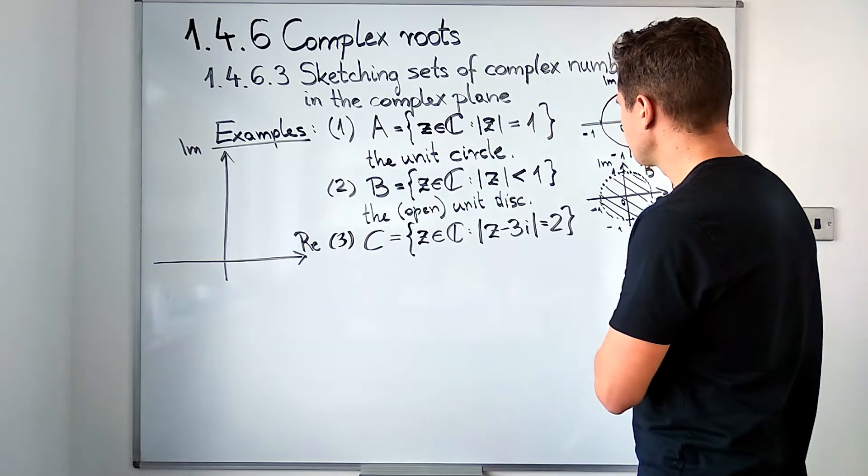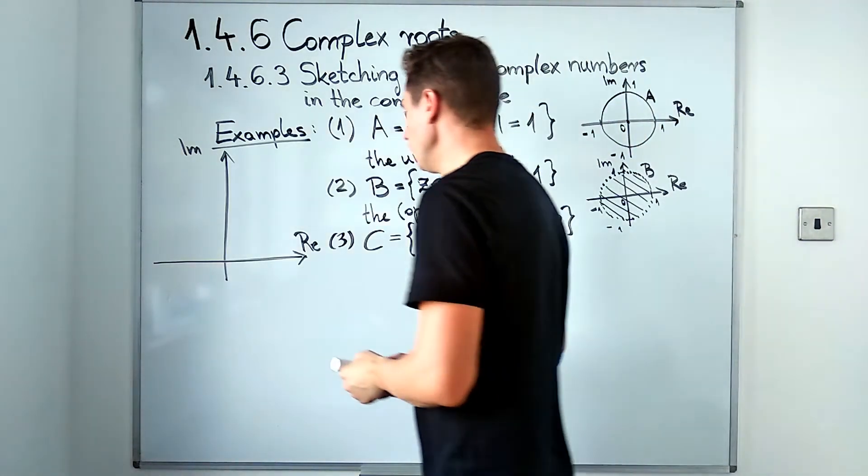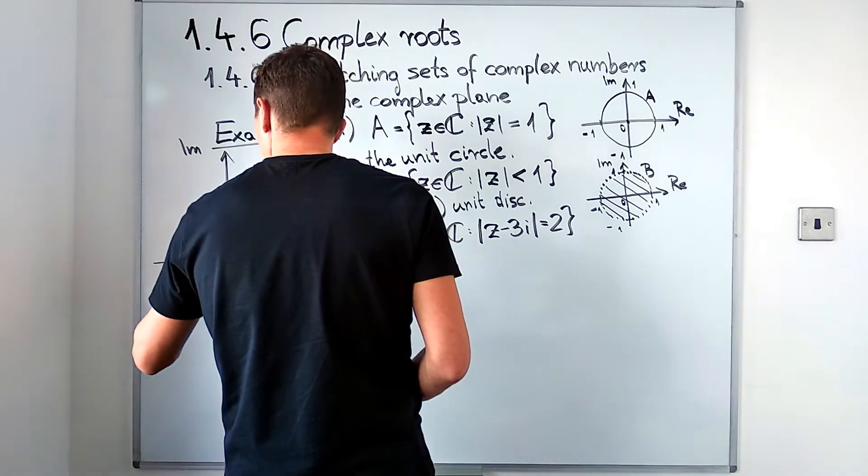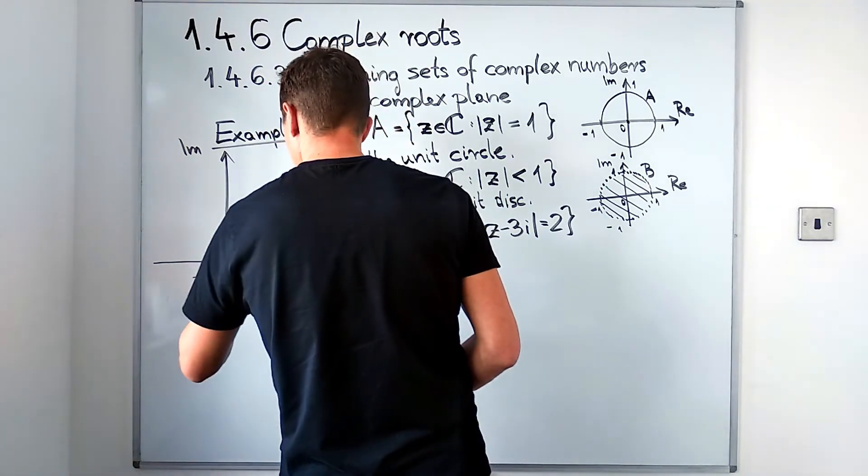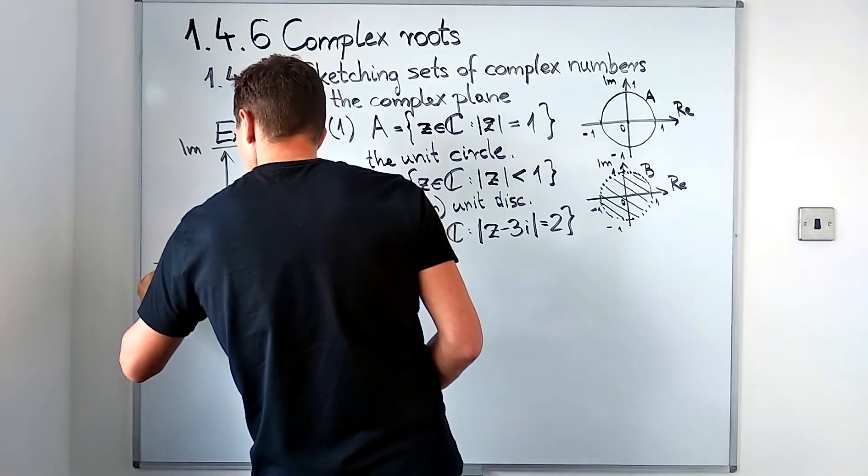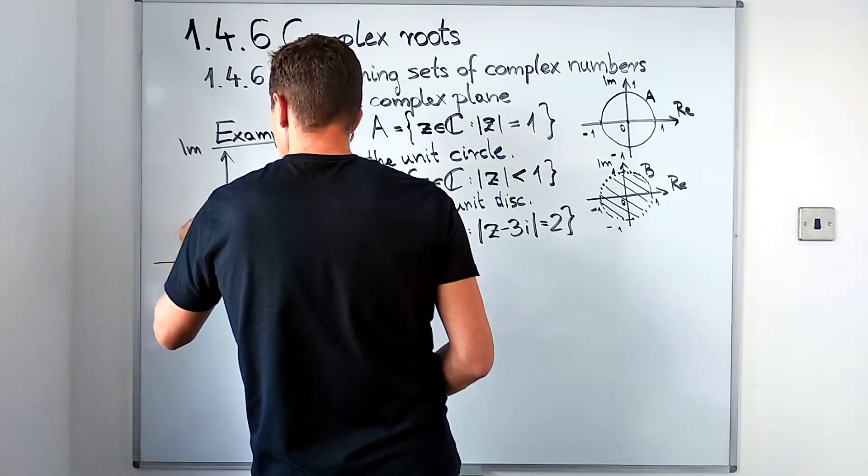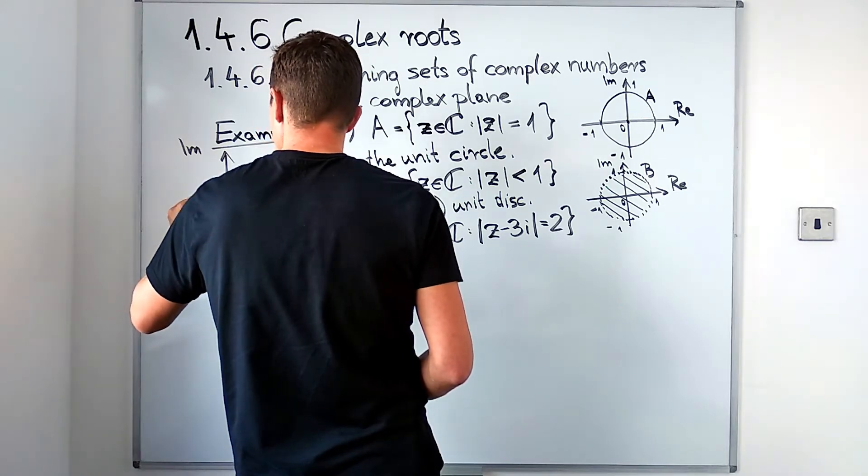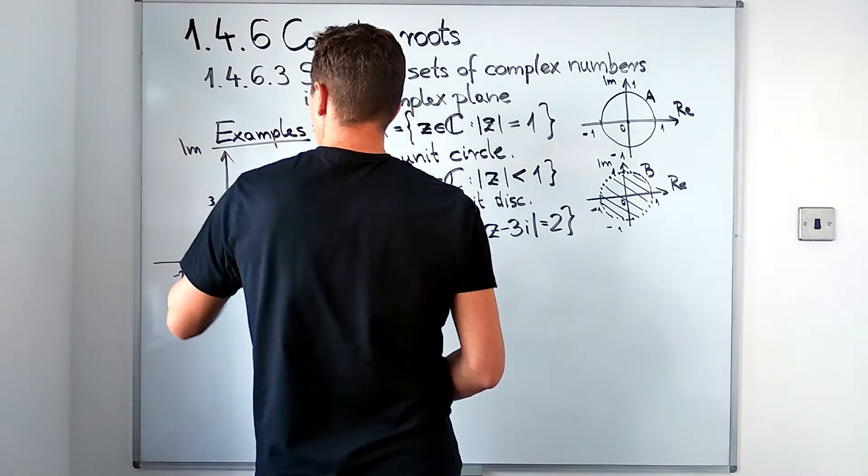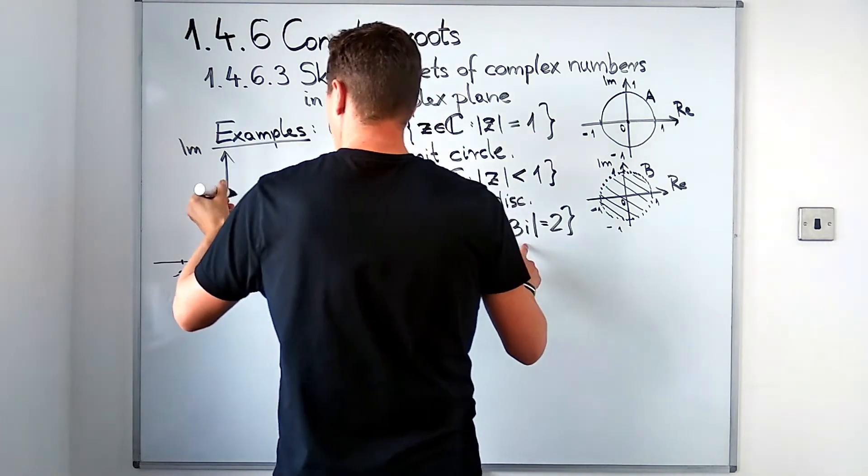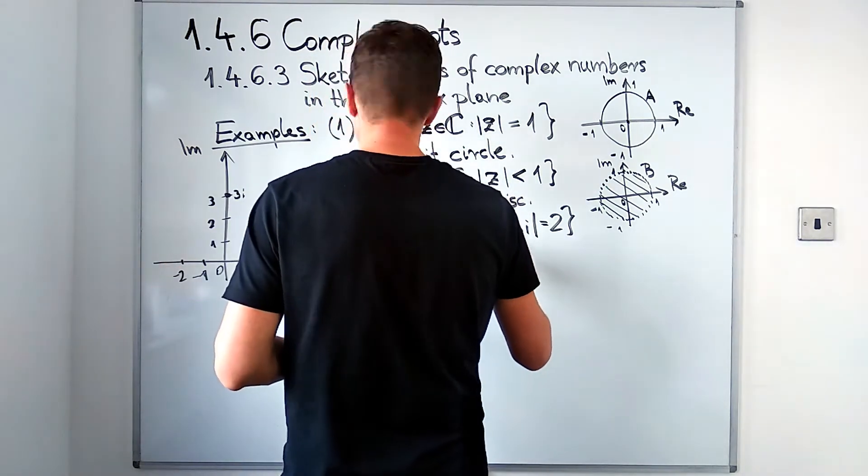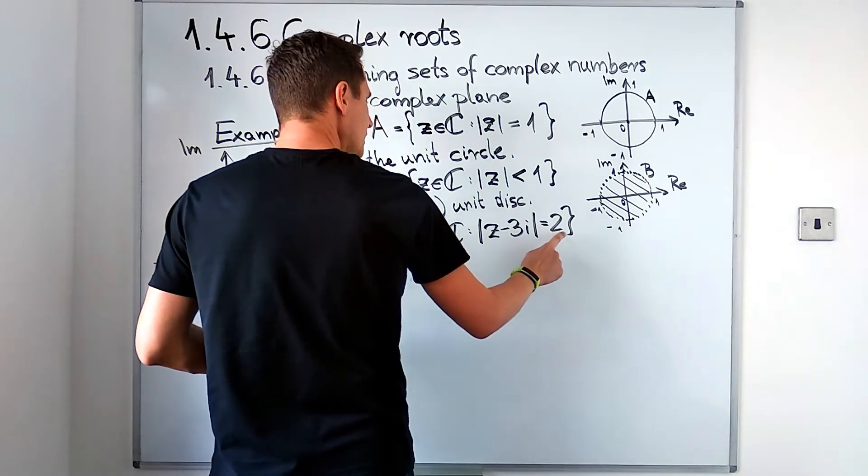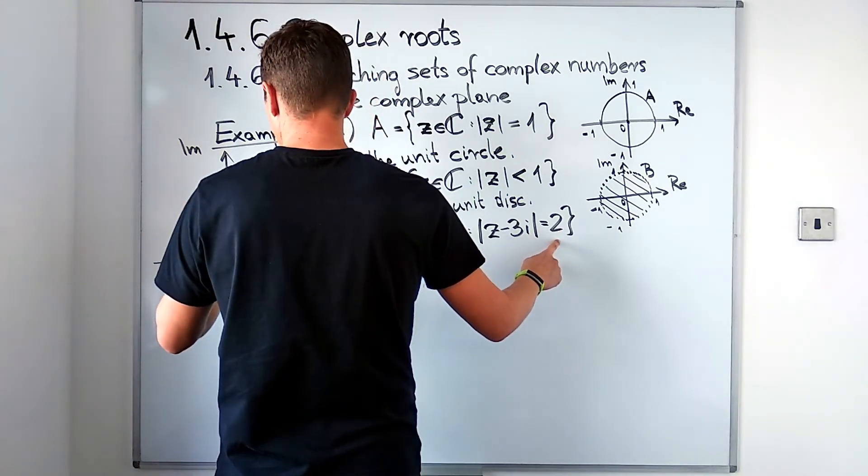If I take the difference, I connect the vectors, the endpoints of the vectors going from the origin to z and the origin to 3i. That means this distance between these two numbers should be two. If I want to sketch this set, I have to go up to three units of distance and this is the point that represents 3i.